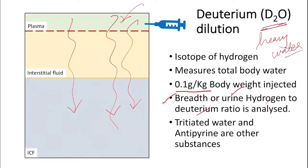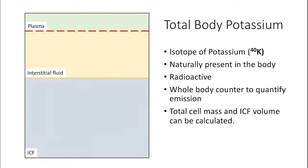Tritiated water is a radioactive isotope of hydrogen; it was once used to calculate total body water but is not safe. Another substance used for total body water estimation is antipyrin. Total body potassium estimation is different from the others — we do not inject anything, as potassium-40 is a naturally occurring radioactive isotope already present in the body. A whole body counter is used to quantify its emissions, allowing us to calculate total cell mass and intracellular fluid volume.